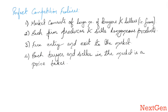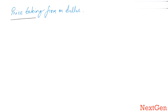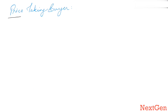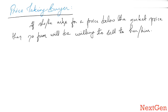Fourthly, and most importantly, each buyer and seller in the market is a price taker. A price-taking firm or seller means if it sets the price of its goods above the prevailing market price then it will be unable to sell. If it sets the price below the prevailing market price then it will not be able to get maximum profit. Therefore it sets the price at the prevailing market price.